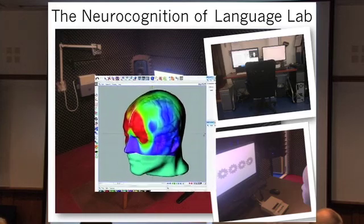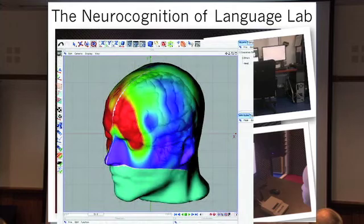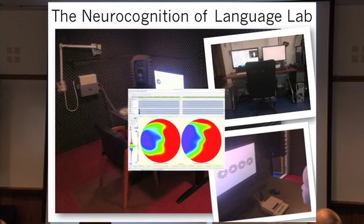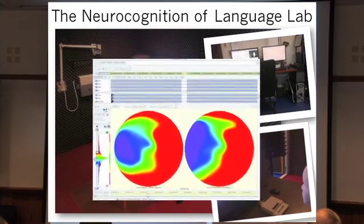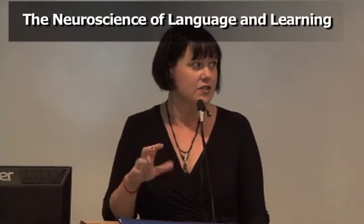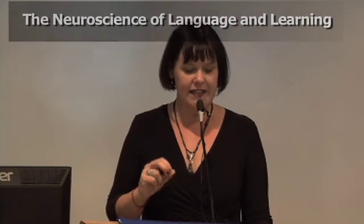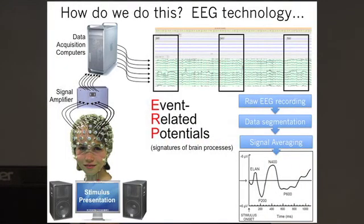In our lab, we carry out brain imaging studies that give us detailed information about how very rapid processes in the brain are unfolding over time. We can do this by measuring the actual communication between brain cells. When brain cells talk to each other, they generate tiny electrical fields, and that's the kind of measurement that we can make. It's called EEG, or electroencephalography.